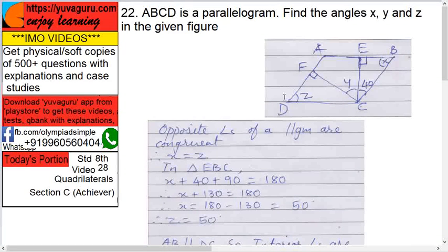Now in triangle EBC, here EBC, X plus 40 plus 90 equals to 180 because sum of all angles of a triangle is 180. So you can find out X equals to, this is 130, take this side, then it becomes 50. Therefore X equals to 50.